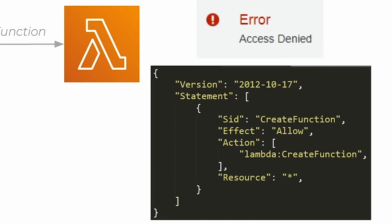At the top we see version — it's just some arbitrary date that no one really knows why it's that particular date. Then we have something called a statement, which is an array, so we can have multiple different statements. This is really the meat of the policy document — it tells us what we are allowed or not allowed to do. Inside that we see something called SID, which is just a name you can give your policy statement. You can name it whatever you want. Now the next three items are the actual important stuff.